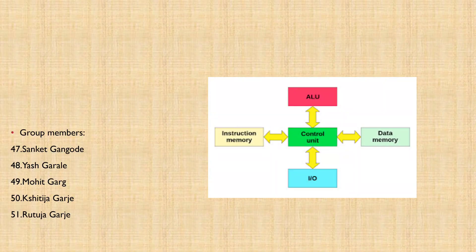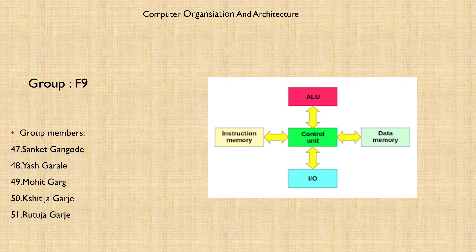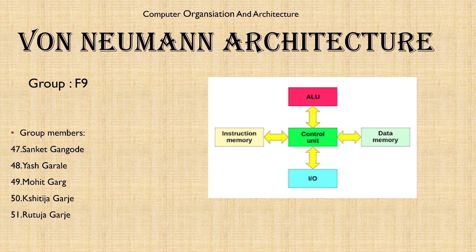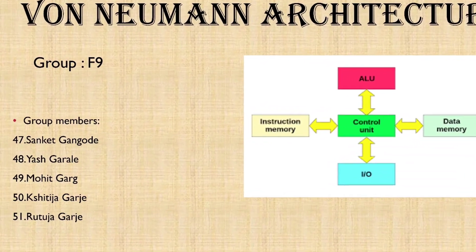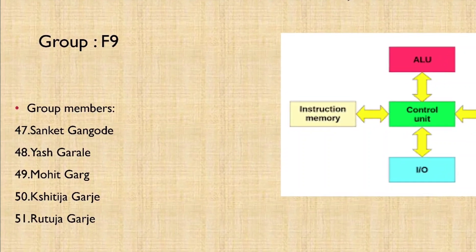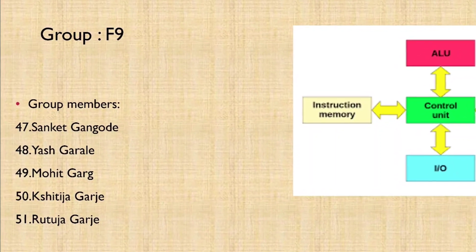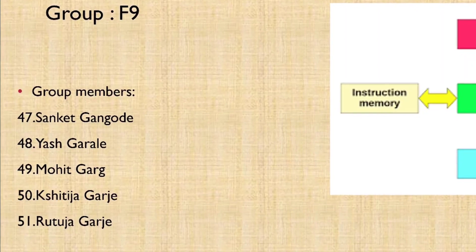Hello everyone, we are Group 9 from Division F, presenting a Computer Organization and Architecture presentation on Von Neumann's Architecture. I am Rutu Jagarje, along with my group mates Sanket Gangode, Yash Garaye, Mohit Garg, and Shiti Jagarje.